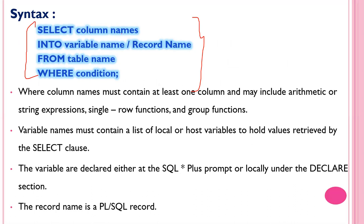The SELECT INTO syntax is: SELECT column_name FROM table_name INTO variable_name or record_name. The INTO keyword is totally new in PL/SQL. The column name must contain at least one column and may include arithmetic expressions, single-row functions, or group functions. The variable name is a comma-separated list of local variables declared in the declaration section.